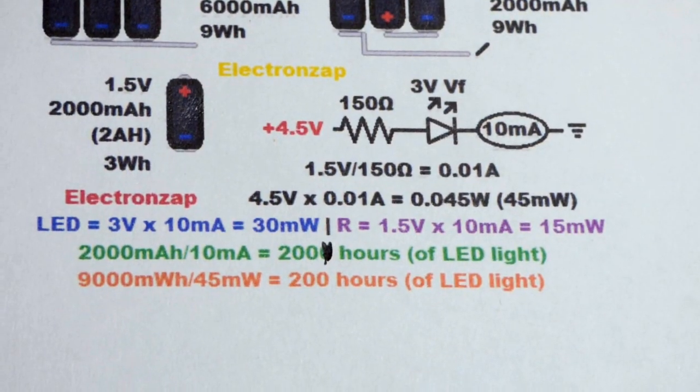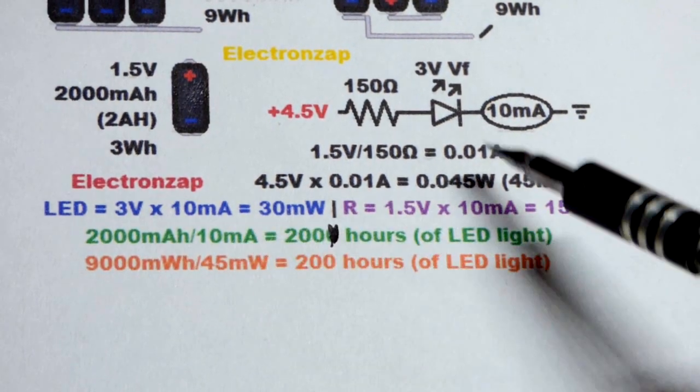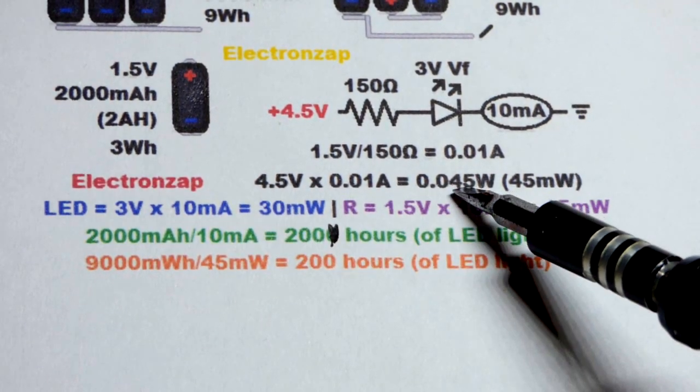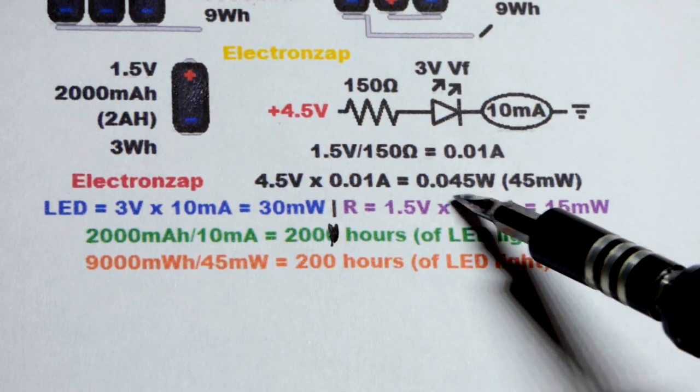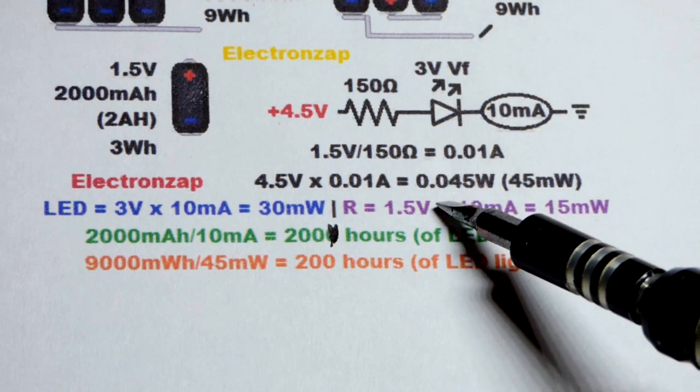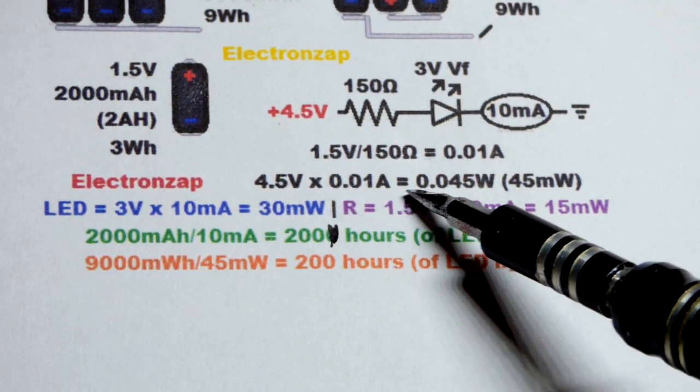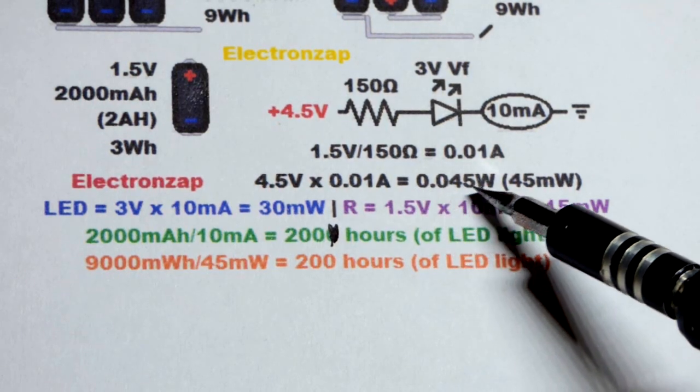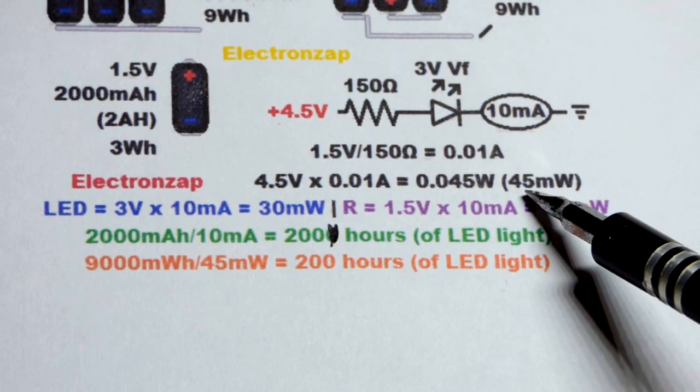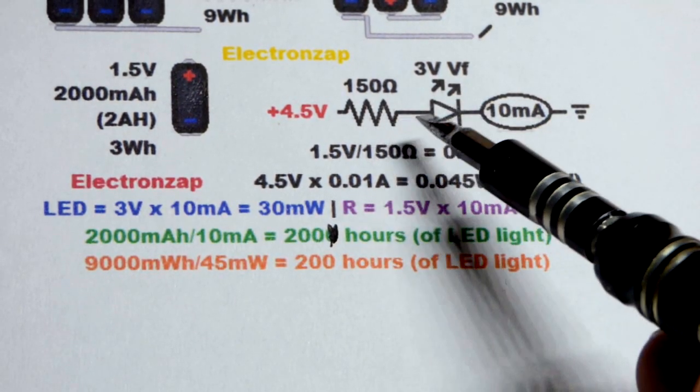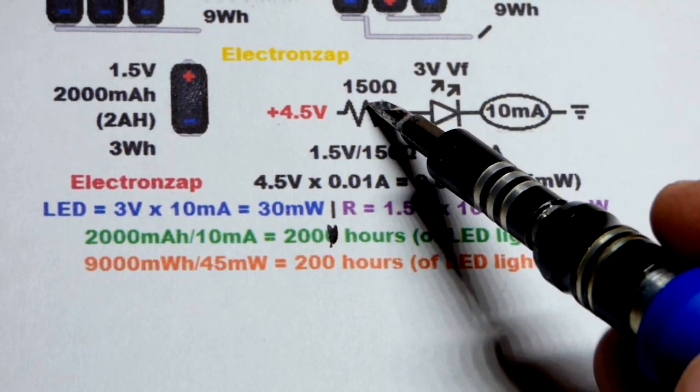So this math isn't complicated. I assume you already know it by now, so I'm not going to go over it in great detail. We have a total circuit wattage, so the amount of work that is being done at any given time. So 4.5 volts times 0.01 amps is 0.045 watts. That's not complicated math. 45 milliwatts for the total circuit. That's how much work is being done. The LED emitting light and the resistor heating up.